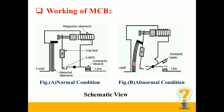As current flows through the bimetallic strip, it heats up and bends to release the mechanical latch, due to which the contacts are separated and the supply is isolated. The deflection time of the bimetallic strip is directly proportional to the amount of current flowing through the strip — the higher the current, the faster the deflection of the strip.